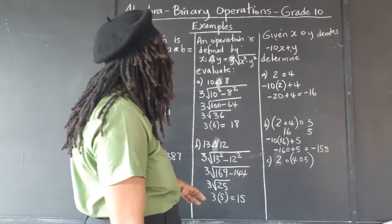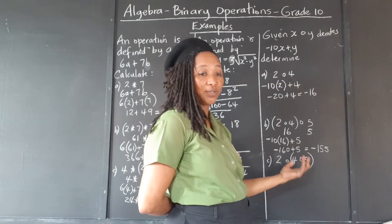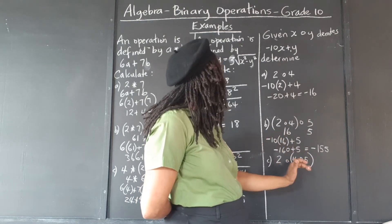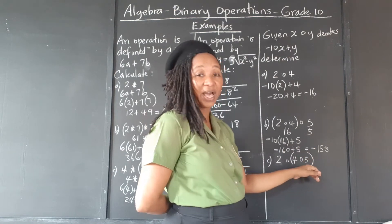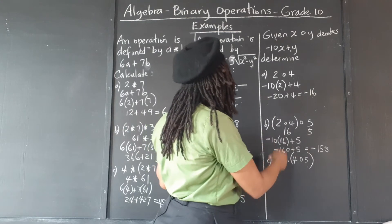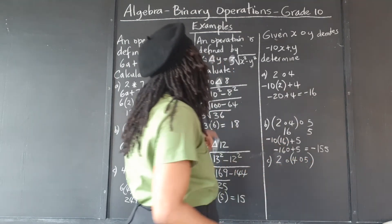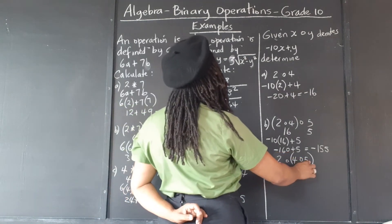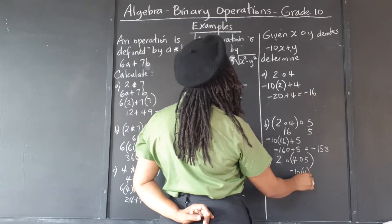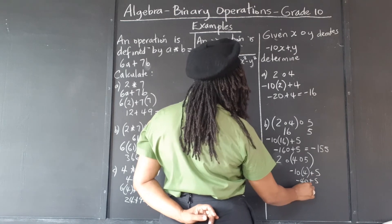And finally, now this, the bracket tells us work this first. Alright, that's what the bracket is saying, work this first. So they're saying work x as 4 and y as 5 first. And when you get that answer, you're going to then work x as 2 and y as whatever this answer is. So let's work these two first. So x is 4, y is 5. So that's negative 10 times 4 plus 5. Negative 40 plus 5. That's negative 35.